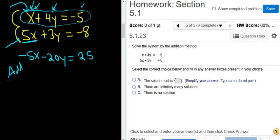Now we add these equations. 5x plus negative 5x is 0. 3y plus negative 20y is negative 17y. And negative 8 plus 25 is 17. So we have negative 17y equals 17.